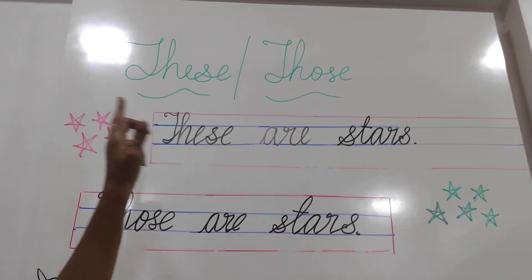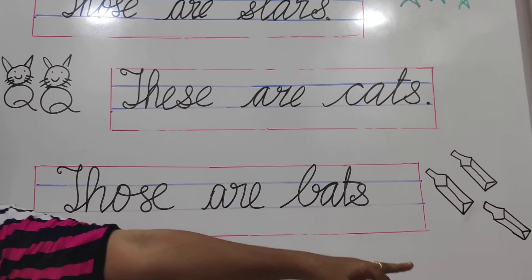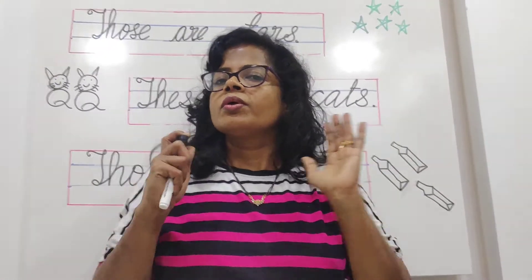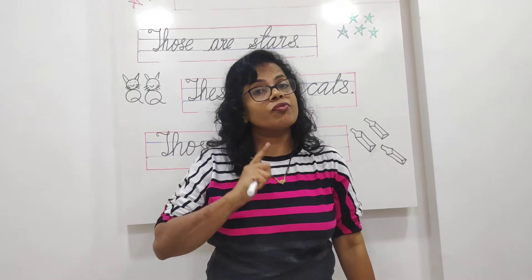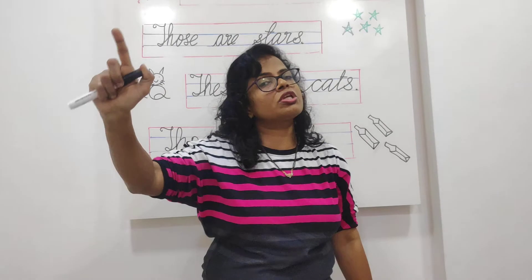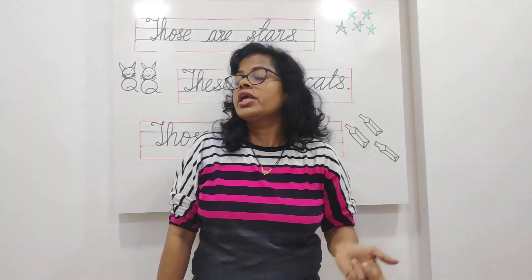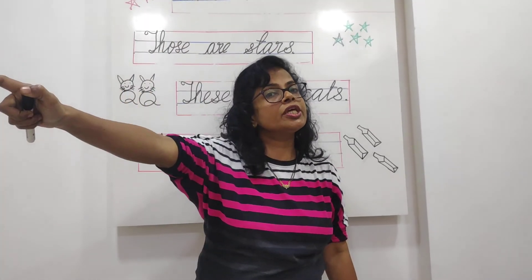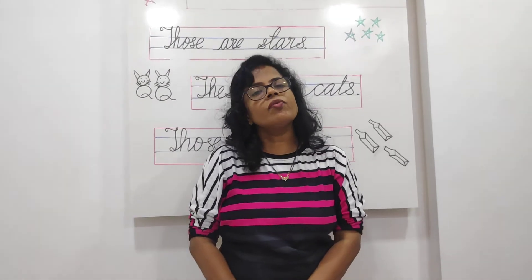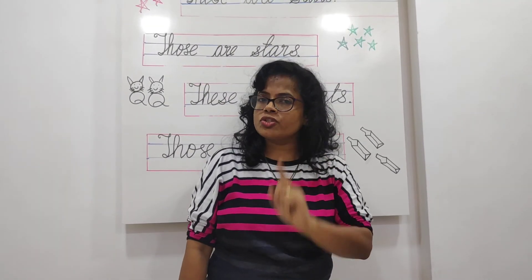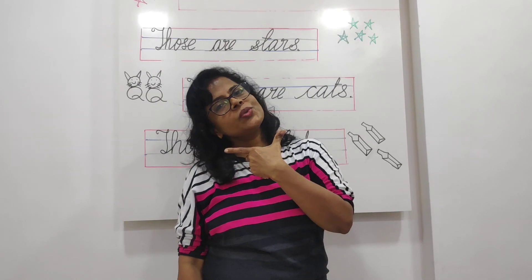Let's review: these are stars, those are stars, these are cats, those are bats. Many things close to us — we use 'these.' Many things far away from us — we use 'those.' One thing near us is 'this'; more than one near us is 'these.' One thing far from us is 'that'; more than one far from us is 'those.' Now everyone learn and practice at home, and complete the pages of your literacy skill sheet. Okay, bye baby! Love you, keep smiling.